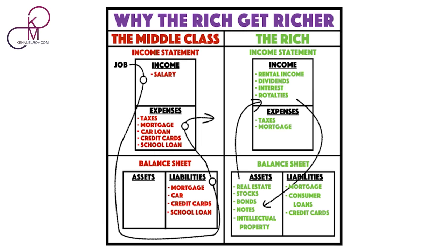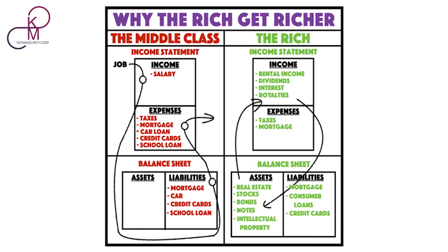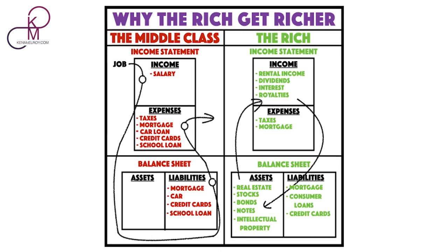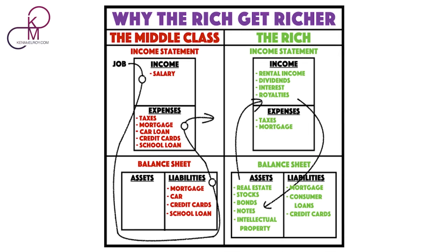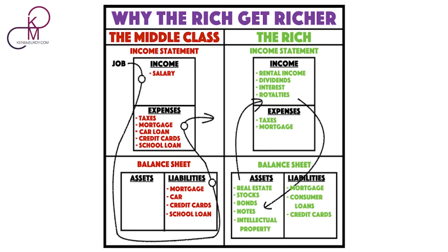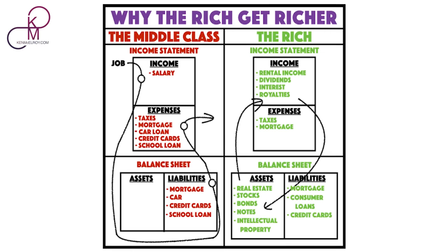The rich start businesses and buy assets for passive income that goes back into the income category. Typically on the rich side of the equation, people have tax problems more than income problems. When they do buy liabilities, they typically only do it when they have enough income to cover that. In the middle class, people get more and more in debt — like student loan debt, which just hit $1.7 trillion, and credit card debt, which also just passed a trillion dollars in the last few months.